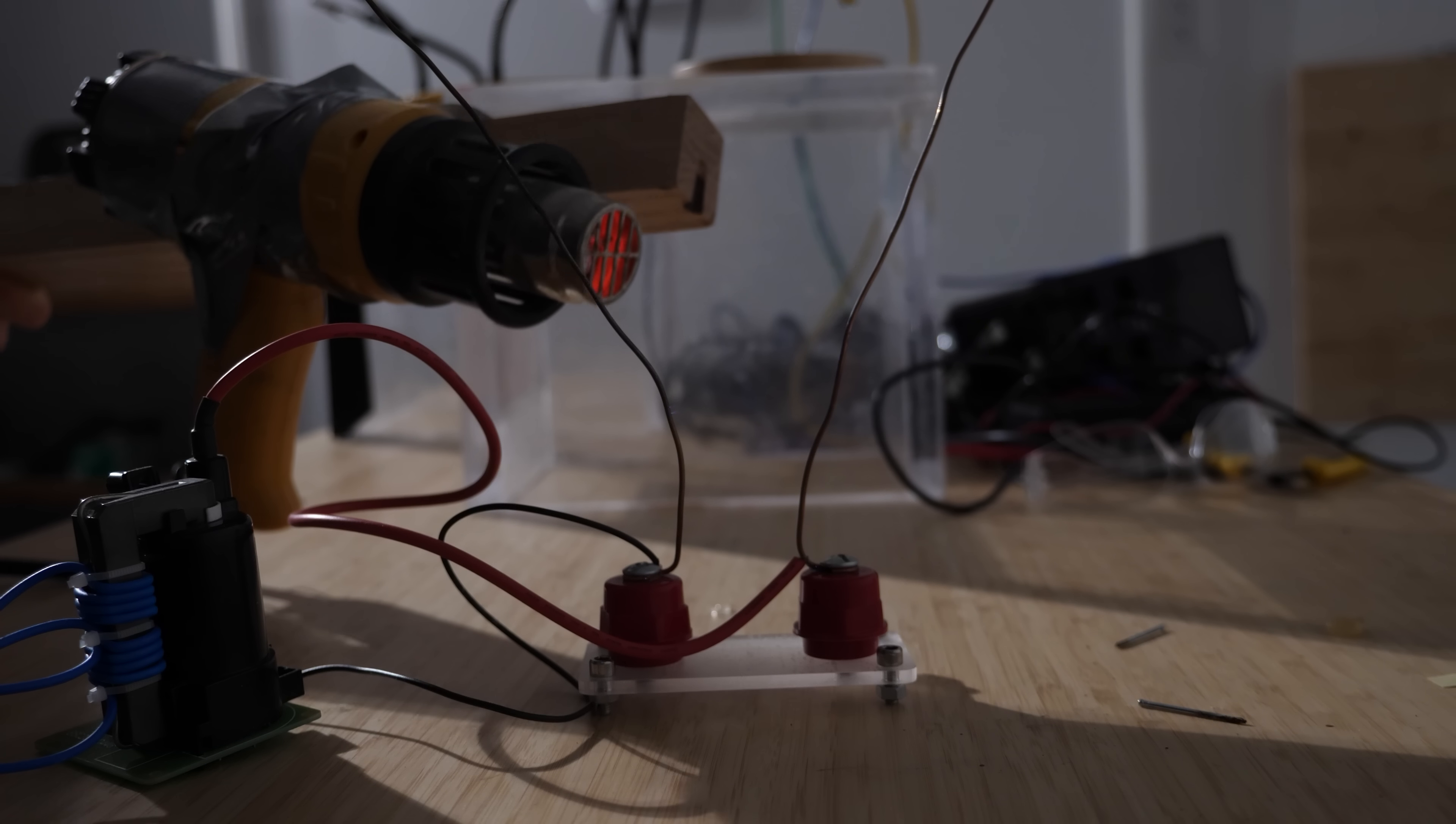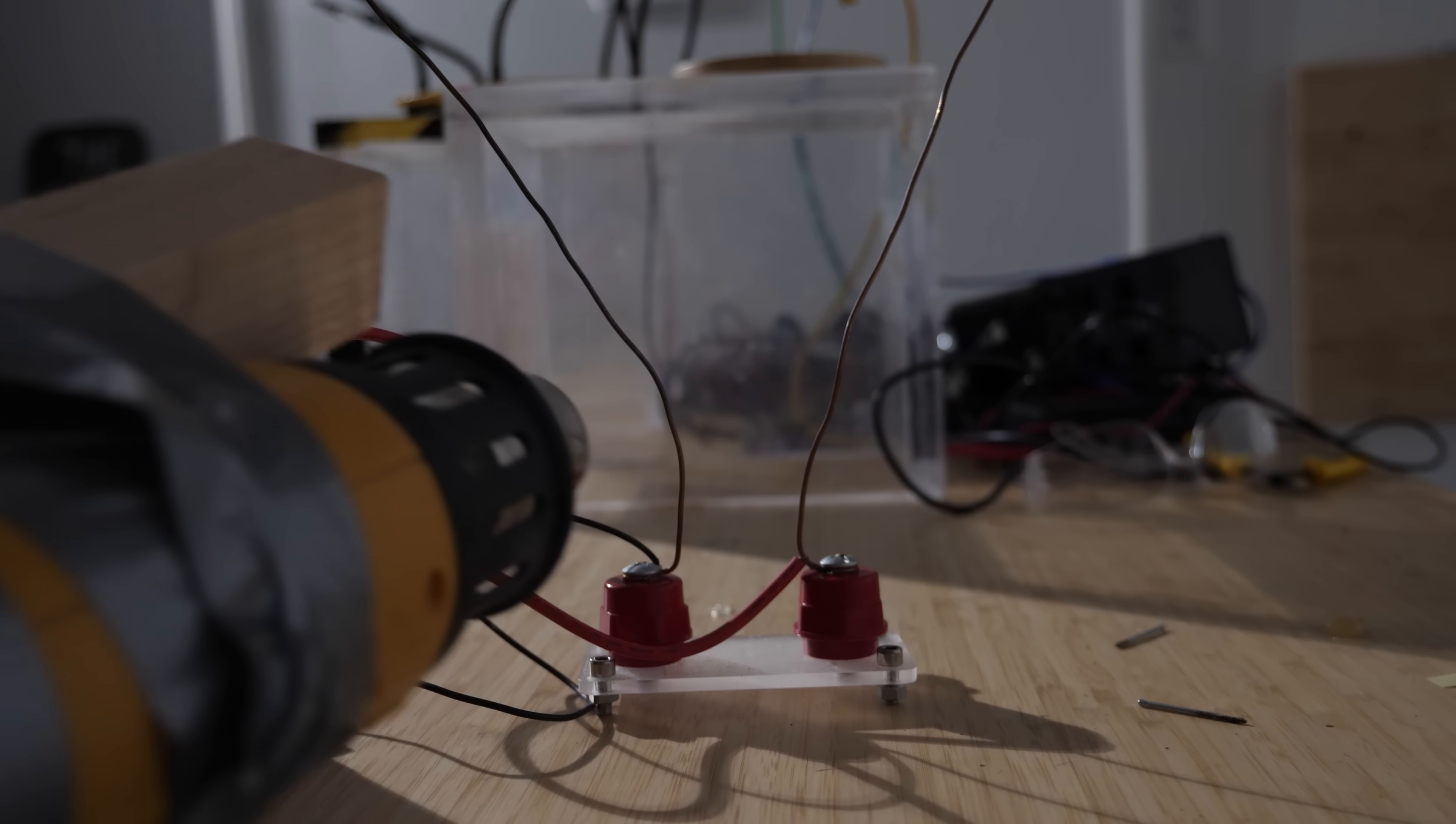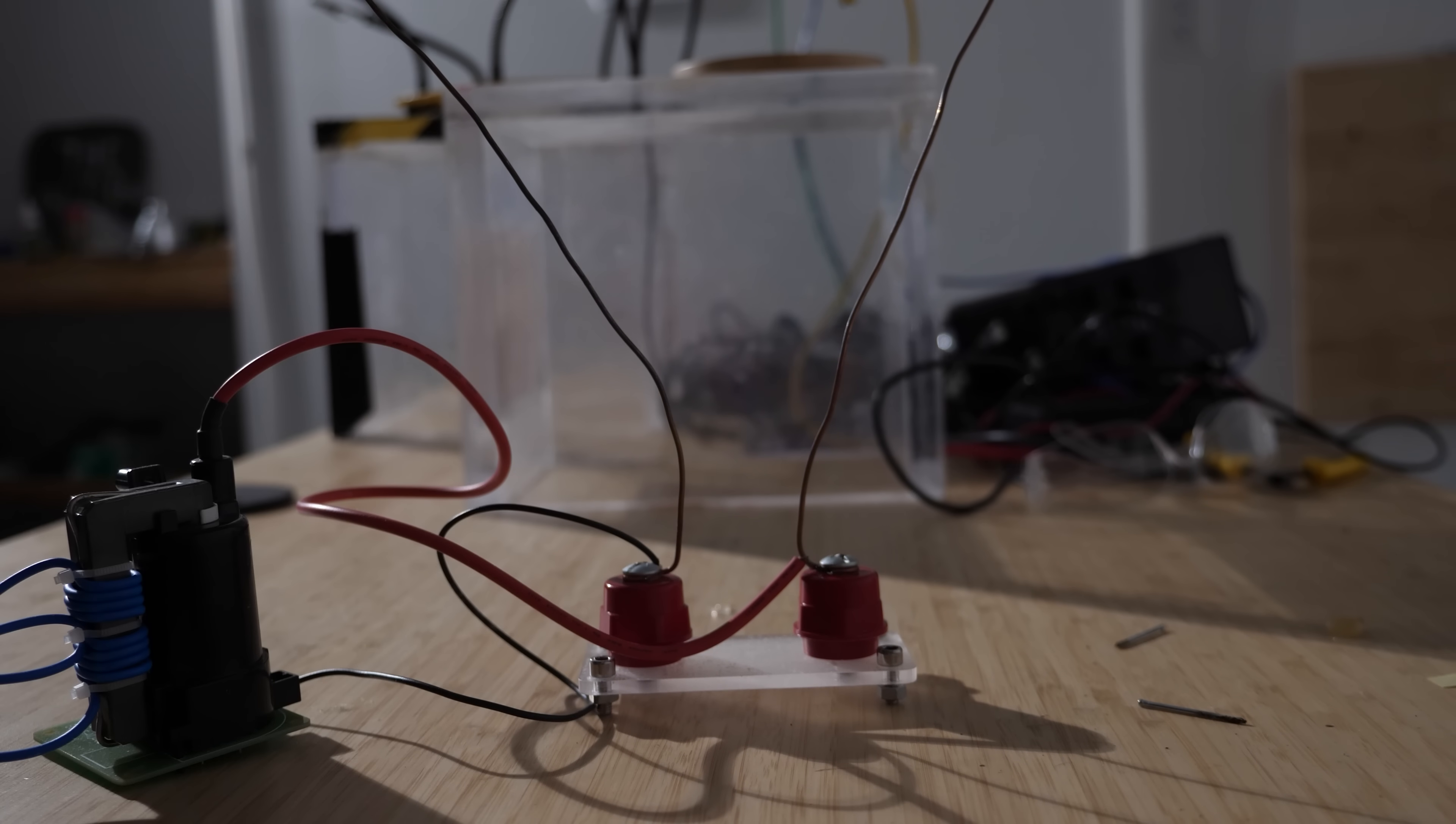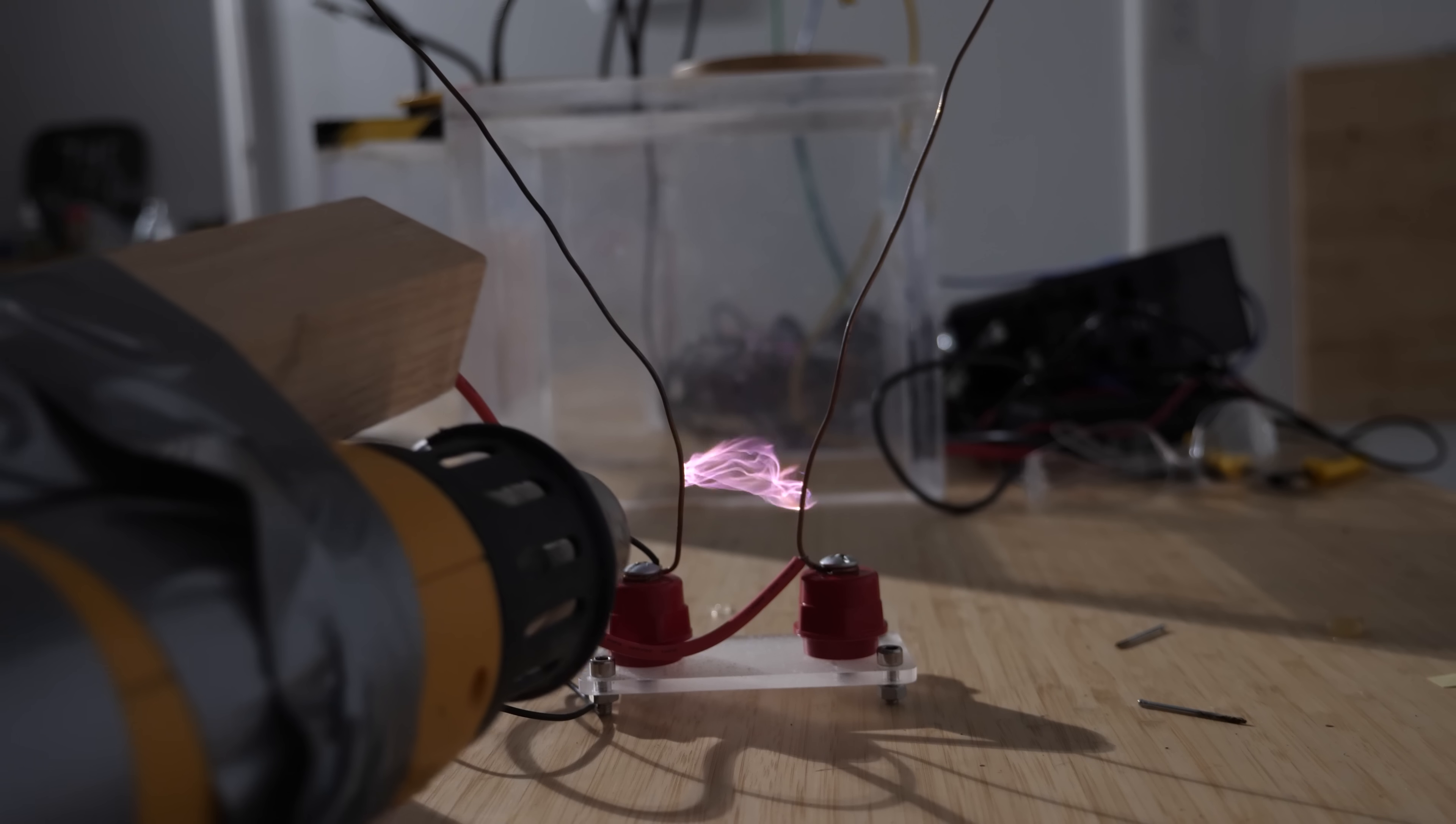Now we're getting closer to being able to guide our plasma where we want it. Hot air lowers the breakdown voltage, meaning it's easier for a spark to form than in cold air. You can see if I blow my heat gun between two high voltage electrodes, a spark can form. It's just the hot air needed. But if I don't put the hot air there, then it can't form.